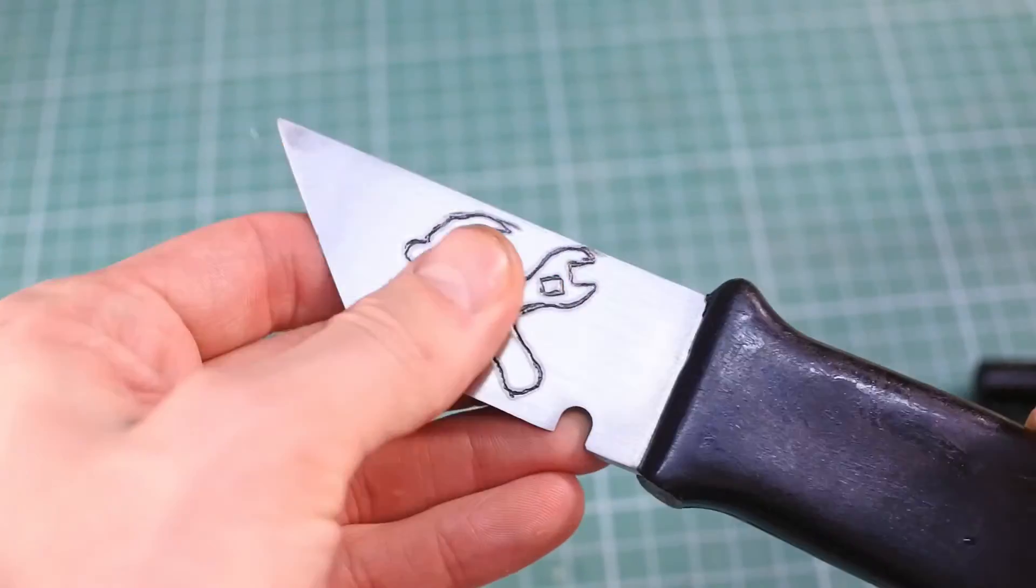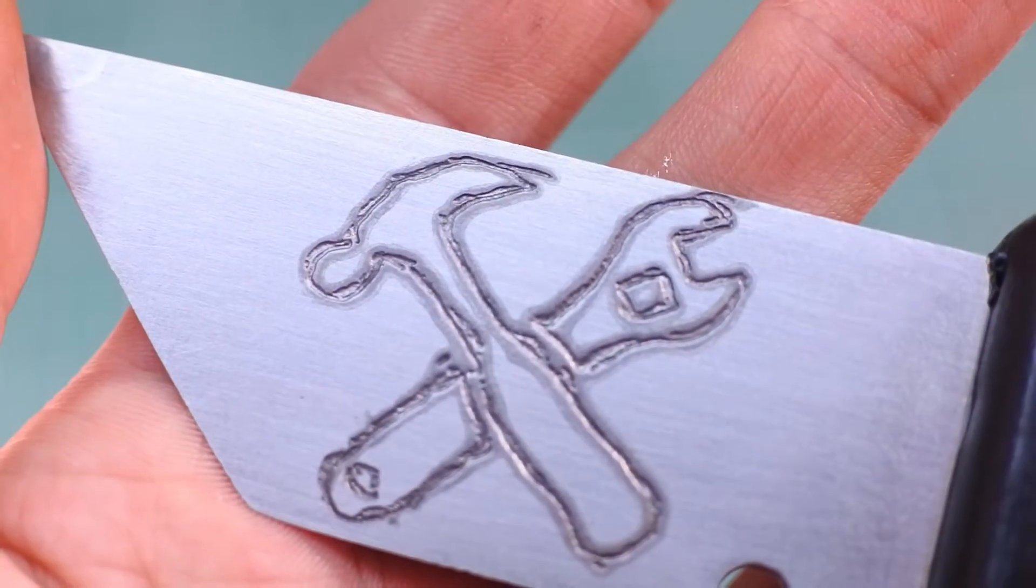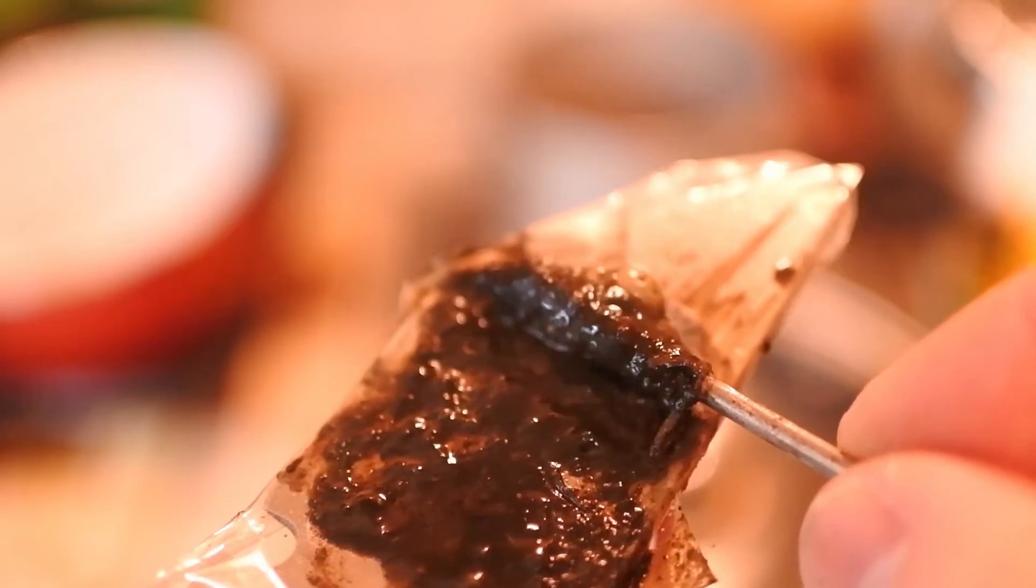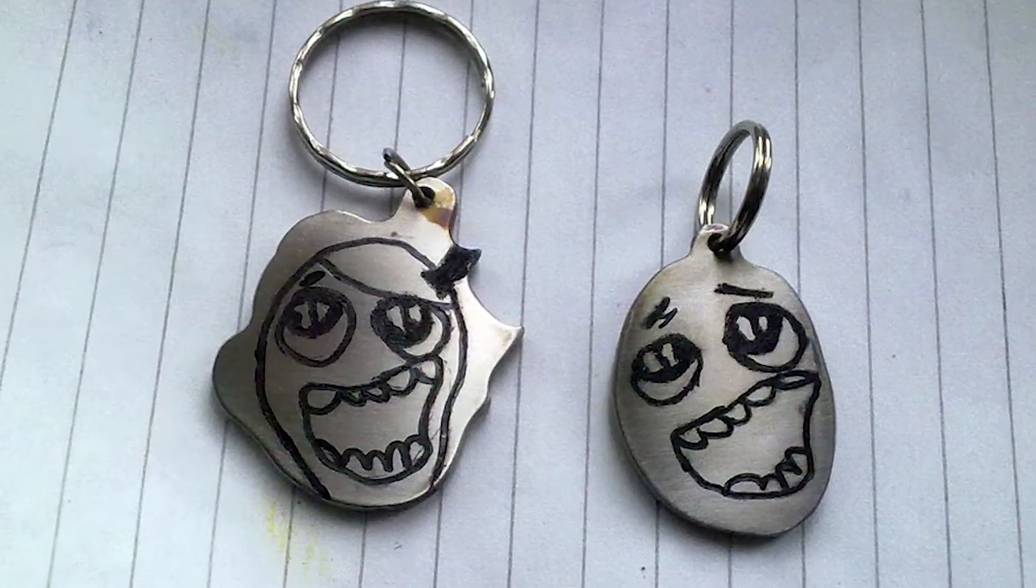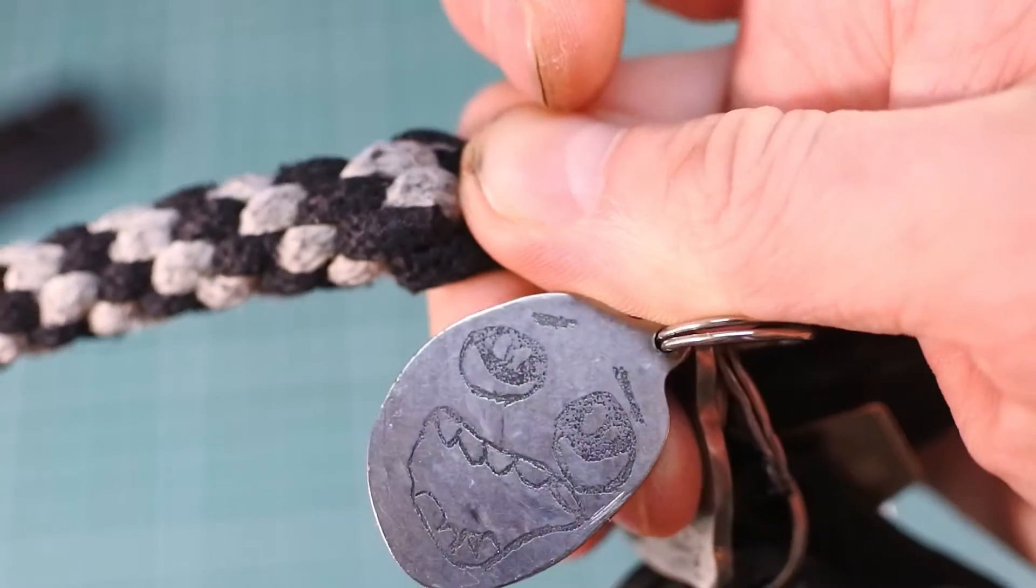Hi guys! This video is about how to easily etch some picture or text on a knife or another metal thing. I used this method to make these pretty meme face keychains.